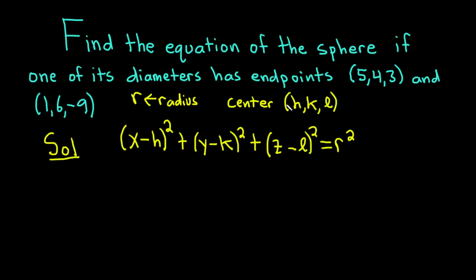We're told that the points (5, 4, 3) and (1, 6, -9) are the endpoints of one of its diameters. So let's start by finding the center of the sphere. We can do that by finding the midpoint between these two points.